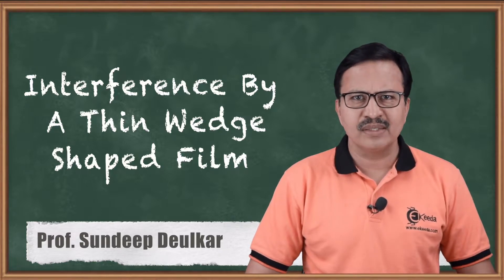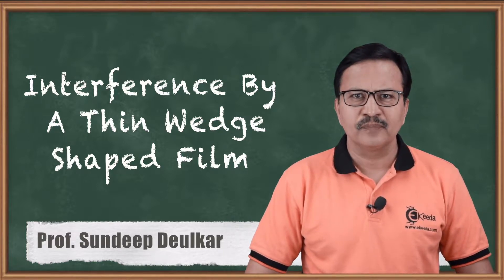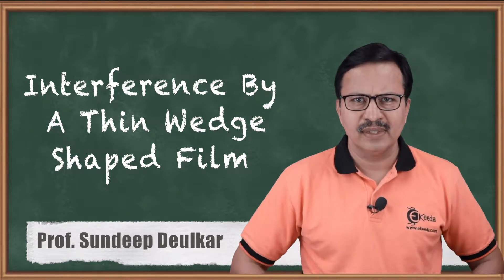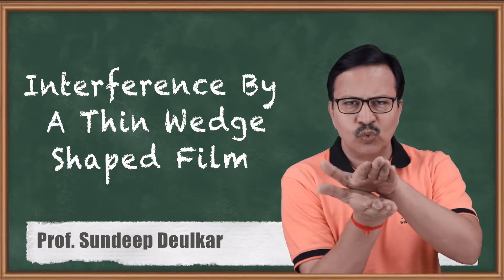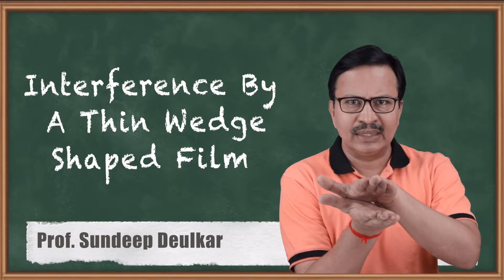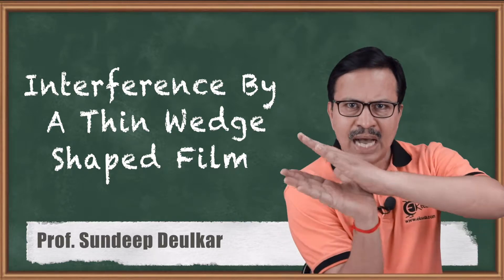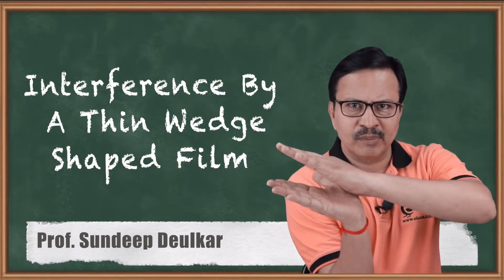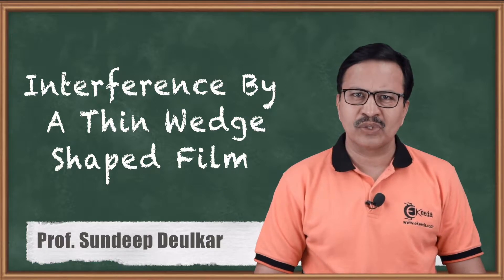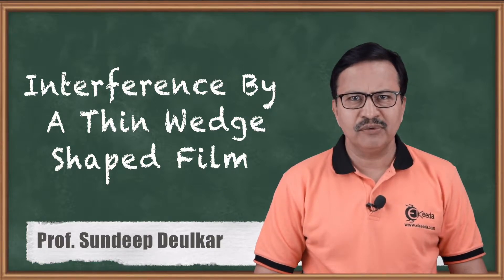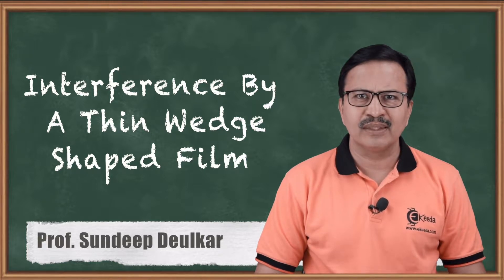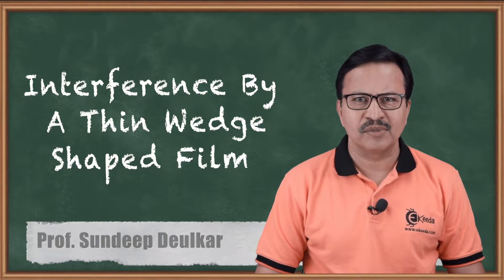So what is a wedge? A wedge has two reflecting surfaces — one surface is parallel whereas the other is inclined at an angle alpha to the base plate. Such a kind of arrangement is called a wedge, and we are going to find out what is the resulting interference pattern produced by such an arrangement.